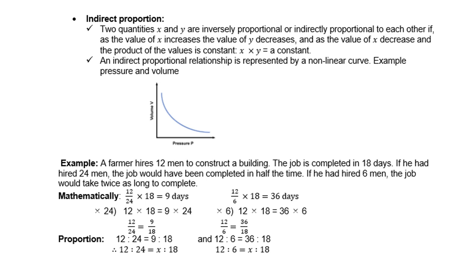Example, a farmer hires 12 men to construct a building. The building is completed in 18 days. If he had hired 24 men, the job would have been completed in half the time. If he had hired 6 men, the job would take twice as long to complete. But it's true people, that more hands, less work. So more men will take less time and less men will take more.